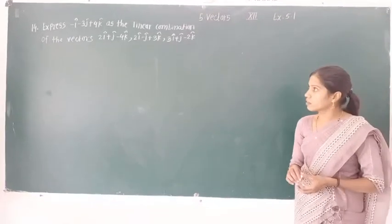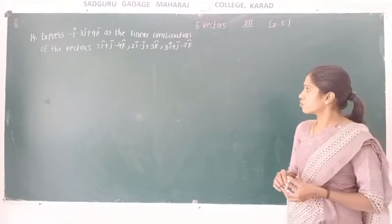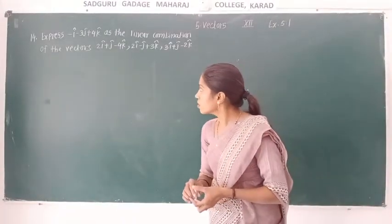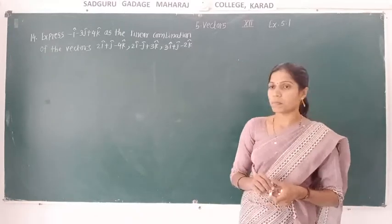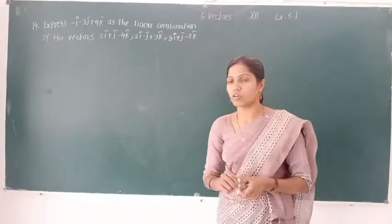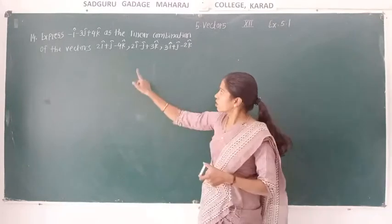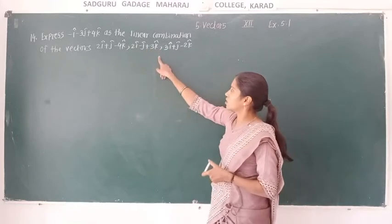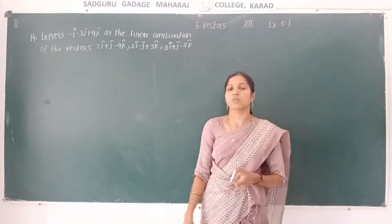Hello students. Now let's see the last example on Exercise 5.1. Example number 14: express the vector -î - 3ĵ + 4k̂ as the linear combination of the vectors 2î + ĵ - 4k̂, 2î - ĵ + 3k̂, and 3î + ĵ - 2k̂.